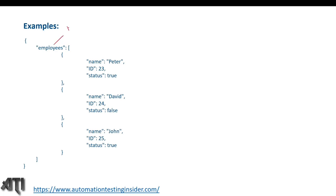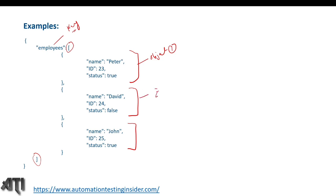Here is another example. 'Employees' is a key and it holds an array. Inside the array we have three objects — object one, object two, and object three — so this is an array of objects. Object one: Peter, id 23, status true. Object two: David, id 24, status false. Remember: objects inside an array should be separated by commas, except the last object.